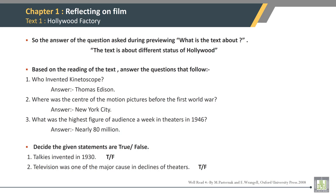The answer to the question asked during previewing — what is the text about? — The text is about different stages of Hollywood. Based on the reading of the text, answer the questions that follow. Who invented the kinetoscope? Thomas Edison. Where was the center of motion pictures before the First World War? New York City. What was the highest figure of audience per week in theaters in 1946? Nearly 80 million.